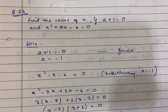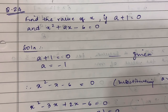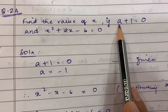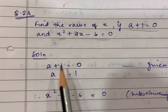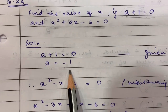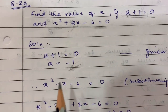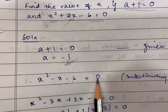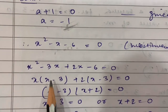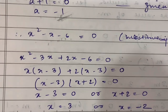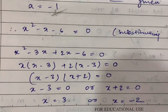Question number 24: given a + 1 = 0 and x² + ax - 6 = 0, find x. Since a + 1 = 0, we get a = -1. Substituting in the equation gives x² - x - 6 = 0. Applying the splitting the middle term method, we get x = 3 or x = -2.